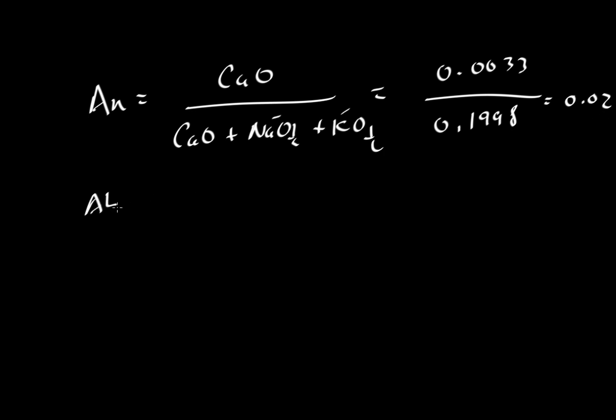For albite, that will be about 0.06 divided by 0.1998, which equals 0.3. And for orthoclase, we'll take the amount of potassium oxide, 0.1361, divided by 0.1998, which will be about 0.68.